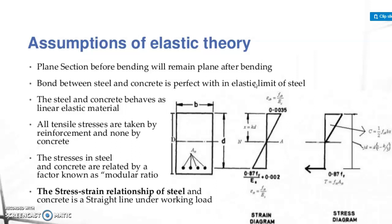The stress in steel and concrete are related by a factor known as the modular ratio, which is denoted as small n. The stress relationship between steel and concrete is a straight line under working load.